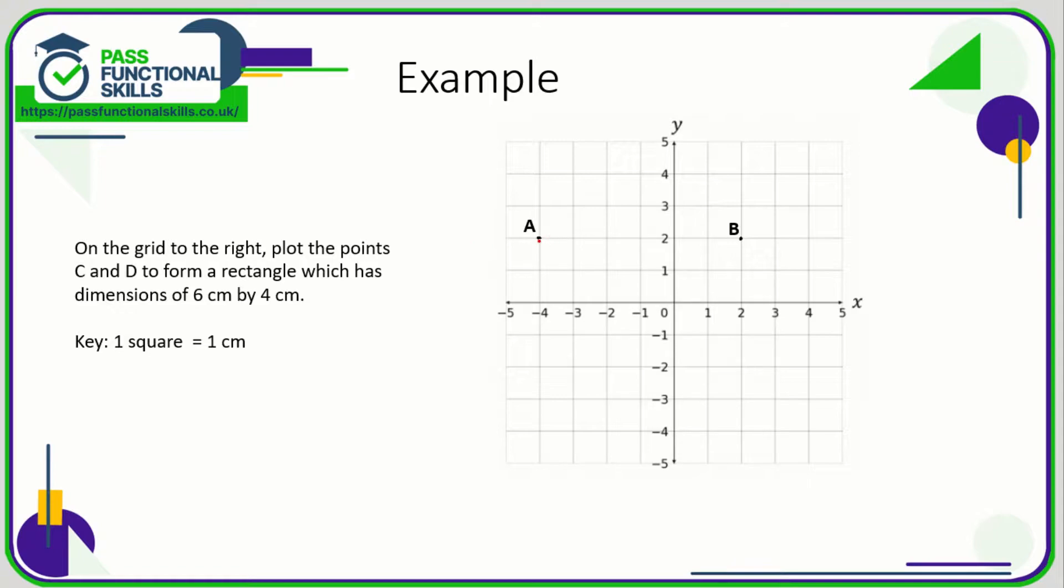So we know A to B is one, two, three, four, five, six. This is the 6 centimeter part of our rectangle. So if we want a rectangle 6 by 4, we could either go up four, except we run out of space, so I'm going to go down four.